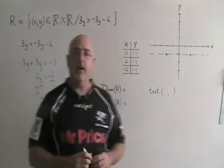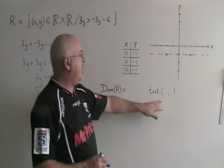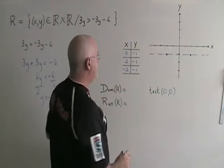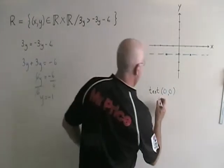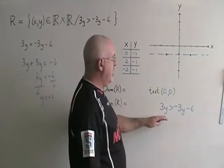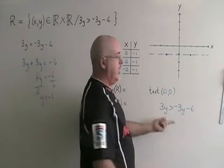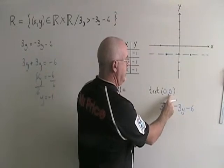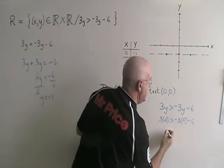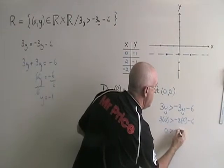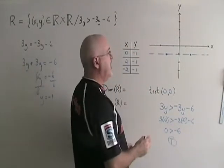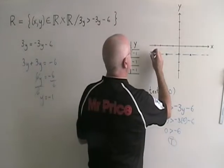Now that my line is on my graph, I have to do my shading. For that, I do a test point. I will test the point (0, 0) because my line does not go through the origin. I write my equation with its symbol and replace x and y with 0 and 0. There are no x's, but there are two y's, and both will be replaced with 0. This cancels, this cancels, and I end up with 0 greater than negative 6. This is true — 0 is greater than negative 6. Therefore, I'm going to shade from the line towards my test point, which in this case means I'm shading up.